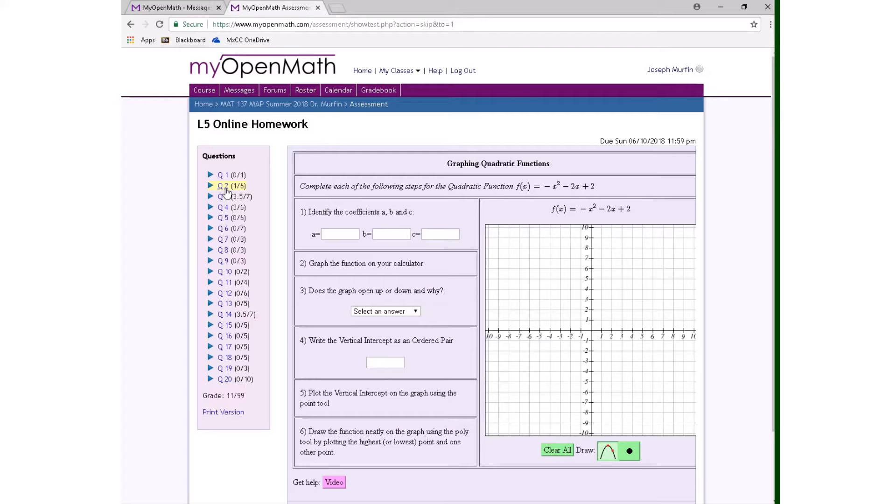So the main thing when you're graphing these quadratic functions, these parabolas, is that you follow the instructions exactly. For example, there's two types of tools: the point tool and the poly tool. This guy right here is the point tool, and this guy right here is the poly tool.